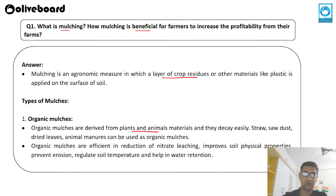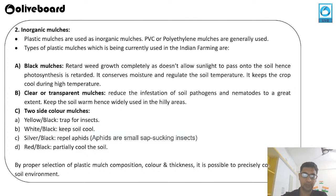Then we have inorganic mulch, which is prepared in laboratories. Inorganic mulches are plastic mulches like PVC (polyvinyl chloride) and polythene mulches. These are the types of plastic mulches currently being used in Indian farming.